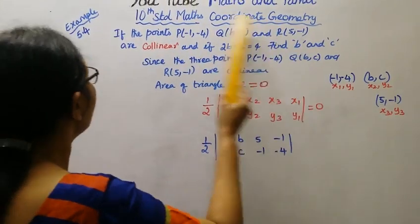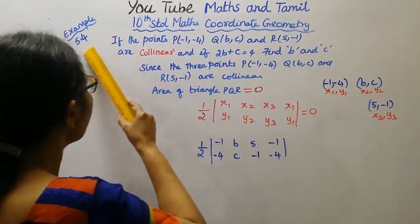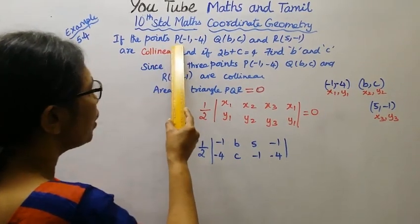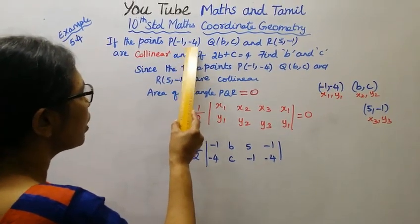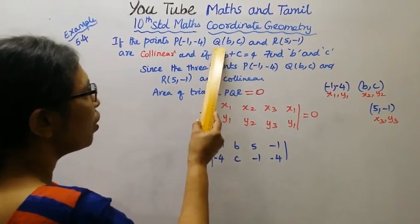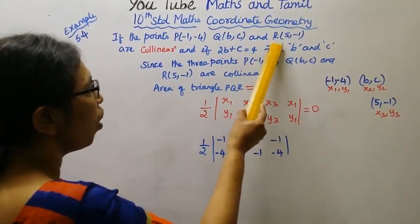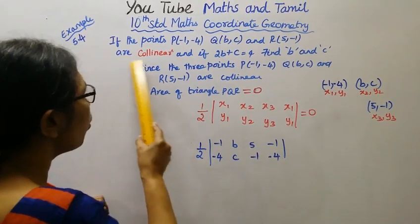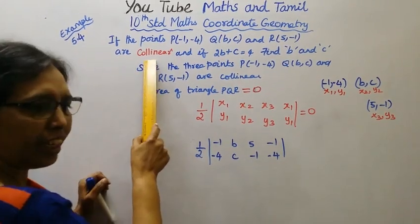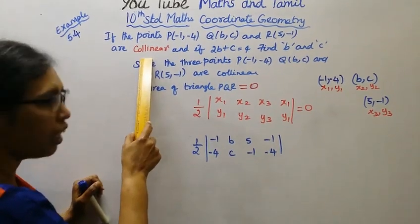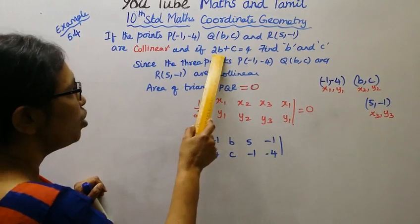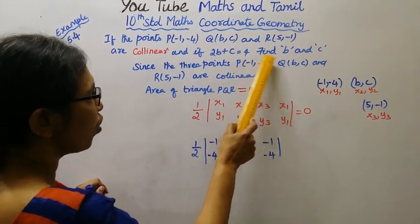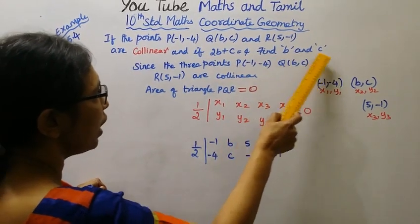Coordinate geometry example 5.4: If the points P(-1, -4), Q(B, C), and R(5, -1) are collinear, and if 2B plus C equals 4, find B and C.